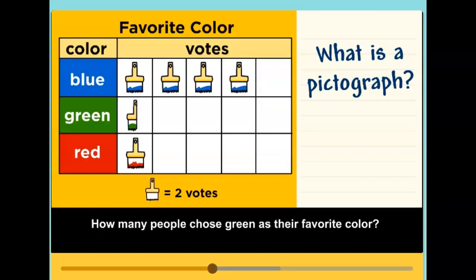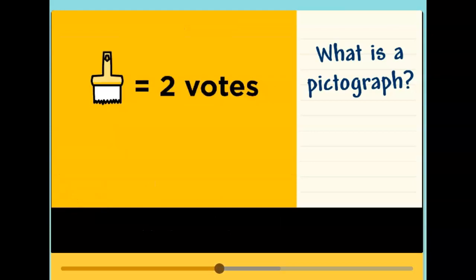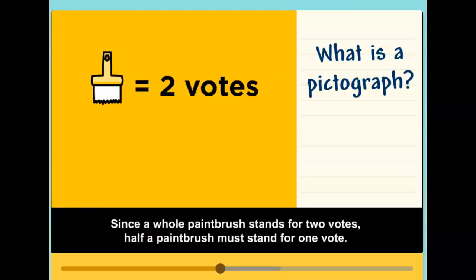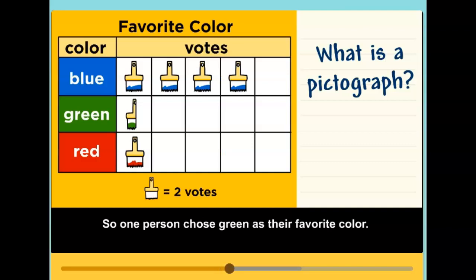How many people chose green as their favorite color? There's half a paintbrush there. Since a whole paintbrush stands for two votes, half a paintbrush must stand for one vote. So one person chose green as their favorite color.